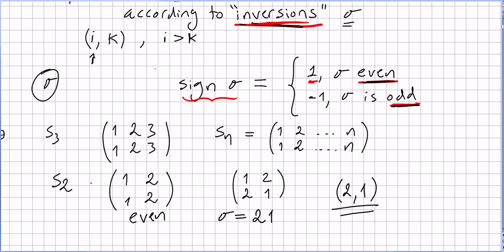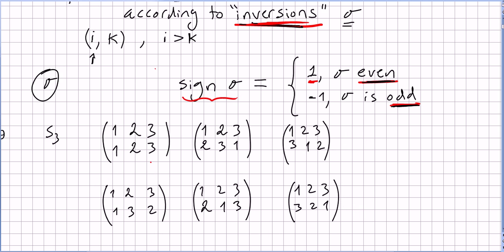So let us write this in a different notation. Let us call the identity permutation sigma zero and this other permutation sigma one. The sign of sigma zero is one because it is the identity, and the sign of sigma one is minus one because it has an odd number of inversions.